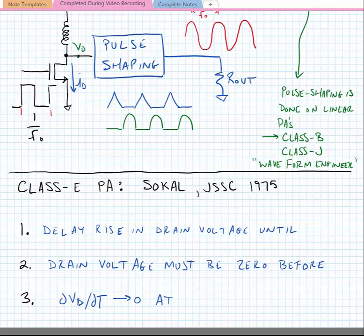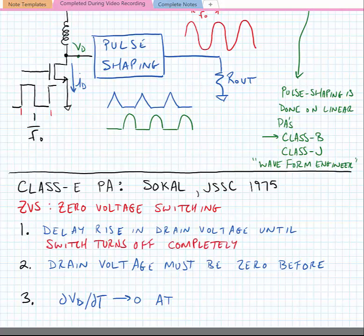Next we're going to look at the class E power amplifier, a specific type of power amplifier first proposed by the Sokal father-and-son duo in JSSC in 1975. This is a class of power amplifier known as zero voltage switching. Zero voltage switching imposes a few rules: first, we delay the rise in the drain voltage until the switch turns off completely; second, the drain voltage must return to zero before the switch turns on; and third, the derivative of the drain voltage must equal zero at switch turn-on, so that no power is dissipated in the pulse shaping network.